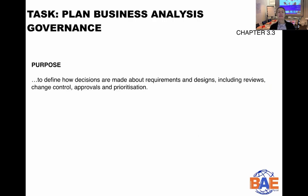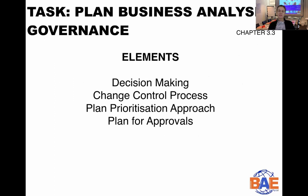The purpose of planned business analysis governance is to define how decisions are made about requirements and designs. It includes reviews, change control, approvals, and prioritization. The four elements to run through are: decision making, change control process, planned prioritization approach, and plan for approvals. This particular task is crucial for business analysis work to be executed successfully throughout the life of the project.